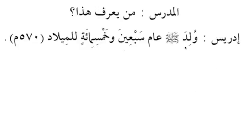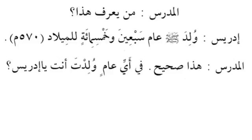Al-mudarris says: Man ya'rifu hadha? Who knows this? Arafa ya'rifu. Idris says: Wulida sallallahu alayhi wasallam 'ama sab'een wa khamsimi'atin lil milad - he was born in the year 570. Normally in classical Arabic you say 70 and 500. In modern Arabic: khamsa mi'atin wa sab'een lil milad. Lil milad means the Common Era calendar - CE or AD - the English calendar.